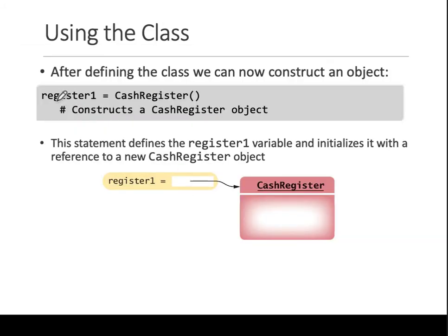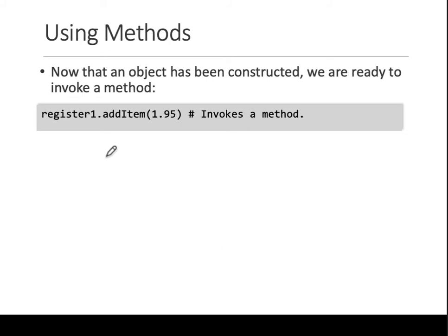To use the class, you give an object name equals the class name — remember the counter example. Similarly, you write register equals cash register and it will create the cash register object. This is showing you what happens inside memory: when you say register equals cash register, it creates an instance of the class and allocates space in memory. Then when you say register_one.add_item, it knows you are calling add_item on that object with the given input.